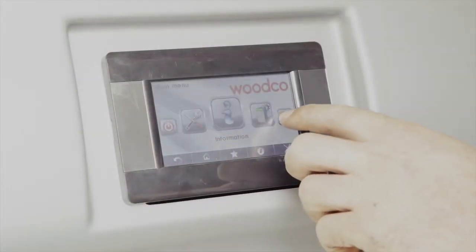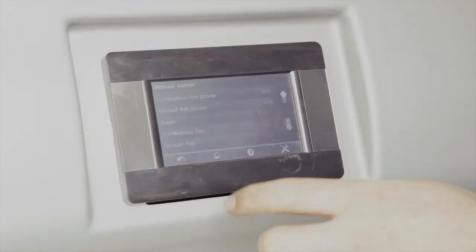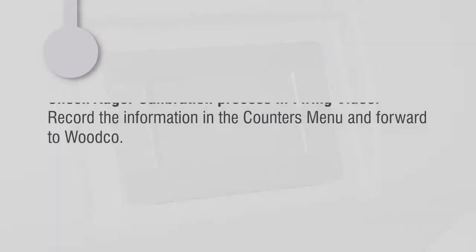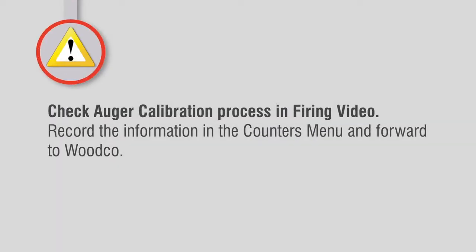Refill the hopper with fuel and re-prime the auger by going into the manual control menu as shown. Check the auger calibration process in the firing video. Record the information from the counters menu and forward the details to Woodco.